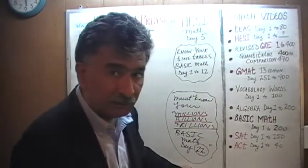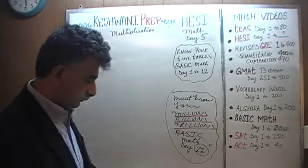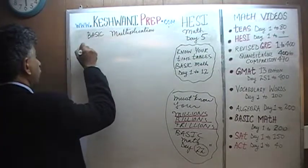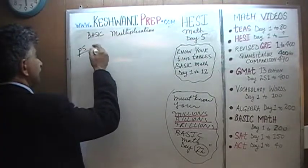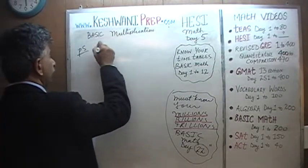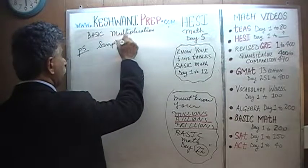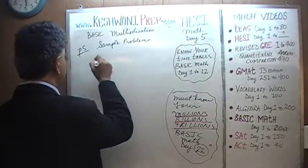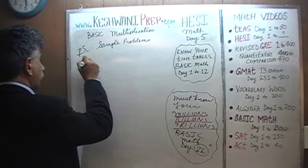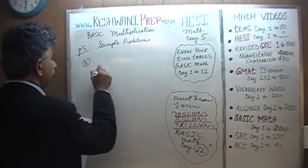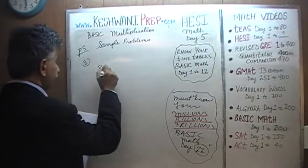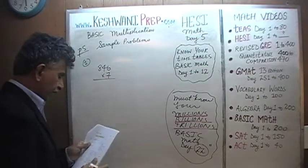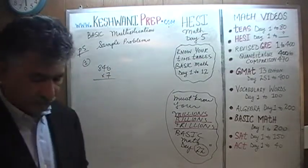Multiplication is all about knowing your times tables. We are on page number five, sample problems. Number one: eight hundred and forty-six times seven.